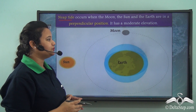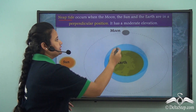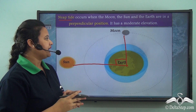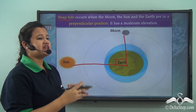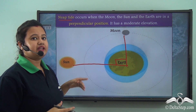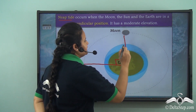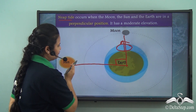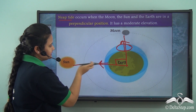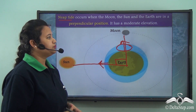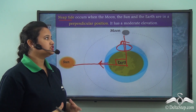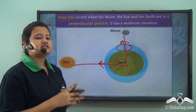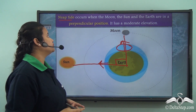Looking at this picture, we can see that these celestial bodies are aligned at 90 degrees — they are perpendicular to each other. Therefore, the water bodies on the earth's surface are attracted by the moon and the sun in two different directions. The water bodies get attracted by the moon in one direction, while the side facing the sun gets attracted by the sun in a different direction, so the water level does not rise much, and this situation is known as neap tide.